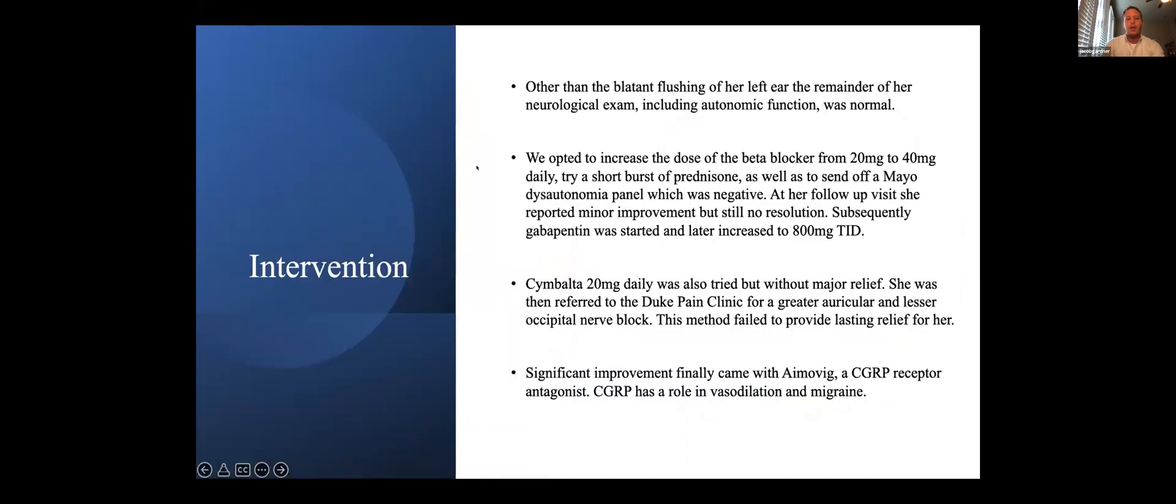For intervention, other than the blatant flushing and warmth to the touch of her left ear, her neurological exam was normal, including autonomic function. At the time we opted to increase the dose of the beta blocker from 20 to 40, tried a short burst of prednisone, and we also sent off a Mayo dysautonomia panel, which came back negative.